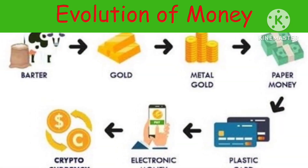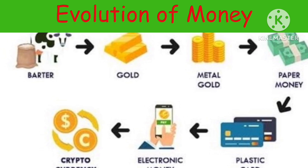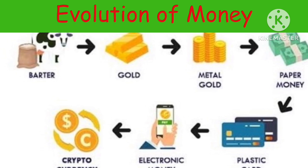In ancient days, we followed the barter method of exchanging — we exchanged things to survive. Then it changed to the gold exchange method, then coins, followed by paper money. Next came debit and credit cards. Nowadays we use electronic device payment methods.